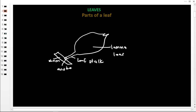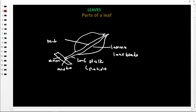We can also call the lamina the leaf blade. The leaf stalk, which is also called the petiole, enriches the lamina. Inside the lamina, the leaf stalk turns into what we call the midrib — so when it enters the lamina, we no longer call it the leaf stalk, it is now called the midrib. Inside the lamina we also have tiny branches called leaf veins.